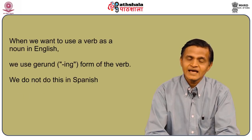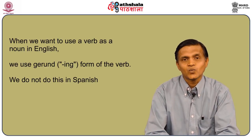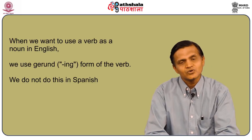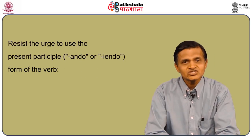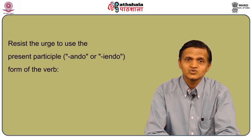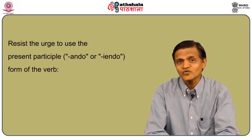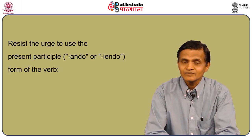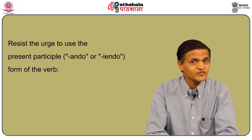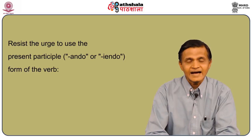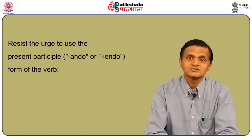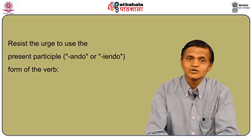When we want to use a verb as a noun in English, we use the gerund or the -ing form, like walking, talking, sleeping — 'hablando, comiendo, dormiendo.' We do not do this in Spanish. Instead of a gerund, we just use the infinitive. Resist the urge to use the present participle -ando or -iendo form. In English we use the -ing form; in Spanish we use the infinitive.